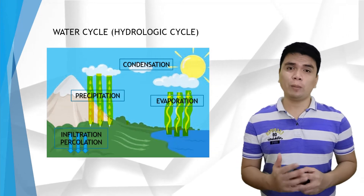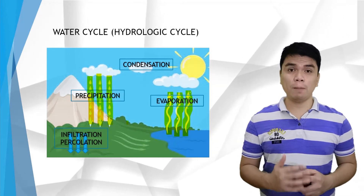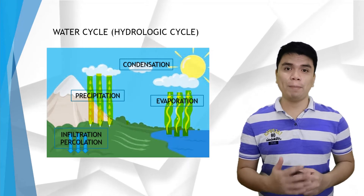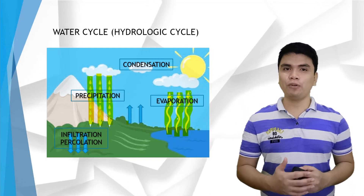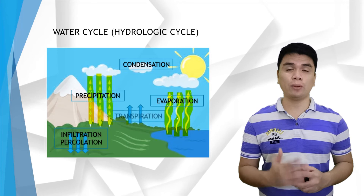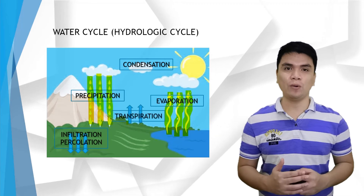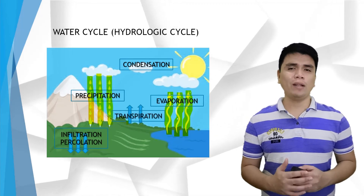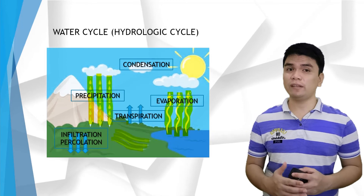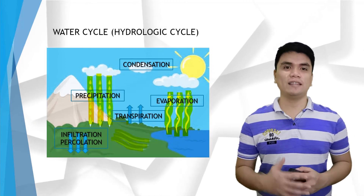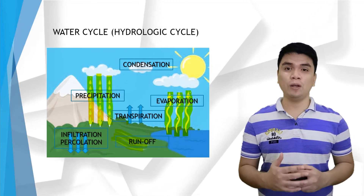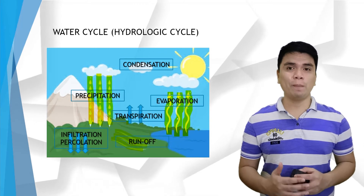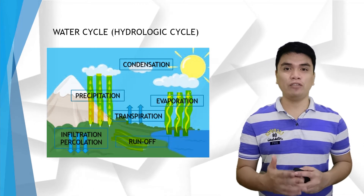Some of it is also absorbed by plants. The water absorbed by plants vaporizes to the atmosphere through the process known as transpiration. Water also flows to the streams, lakes, and seas in the process known as runoff, and that goes back to the evaporation process.